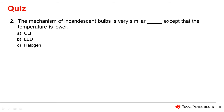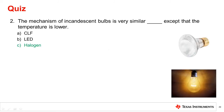Question 2: The mechanism of incandescent bulbs is very similar to blank, except that the temperature is lower. The operational mechanism of incandescent bulbs and halogen bulbs is both thermal heating of a filament. LED and compact fluorescent bulbs work on different principles, so the correct answer is C.